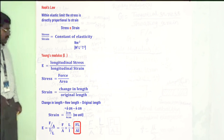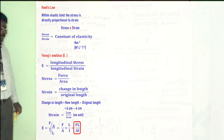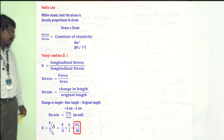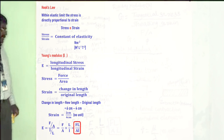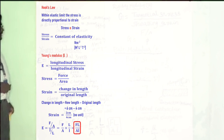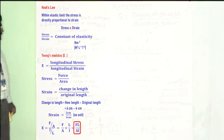So Young's modulus E equals F by A divided by small l by capital L, which gives F dot capital L by A dot small l — that is, force times original length divided by area times change in length. This is Young's modulus. It has the unit Newton per meter square. All the moduli have the unit Newton per meter square.